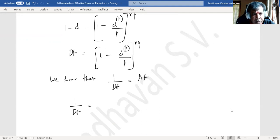This is nothing but 1 minus dp by p to the power of np. Or actually I should not say np—it is the reciprocal, so that means it is negative np.